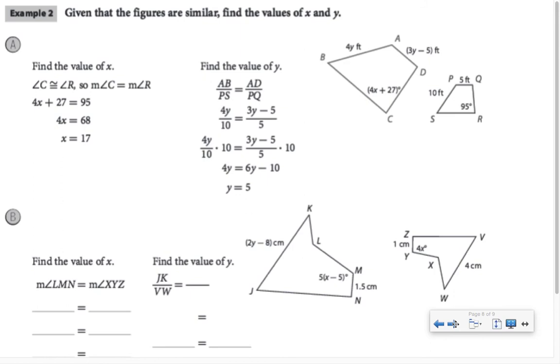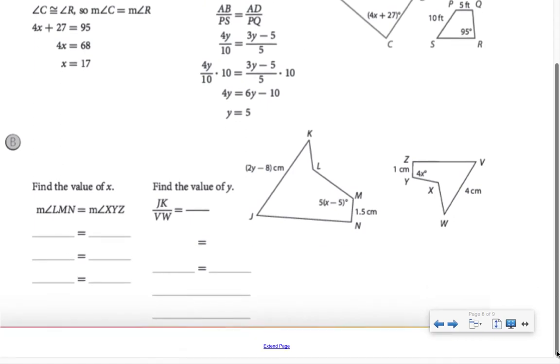In part B, when I'm finding the value of X, notice that X is represented in an angle measure. I know that angle LMN is congruent to XYZ. So that's why we would set 5 times X minus 5 equal to 4X. When we distribute the 5, we've got 5X minus 25 equal to 4X. Subtract the 5X from both sides, and I've got negative 25 equals negative X, so X is 25.